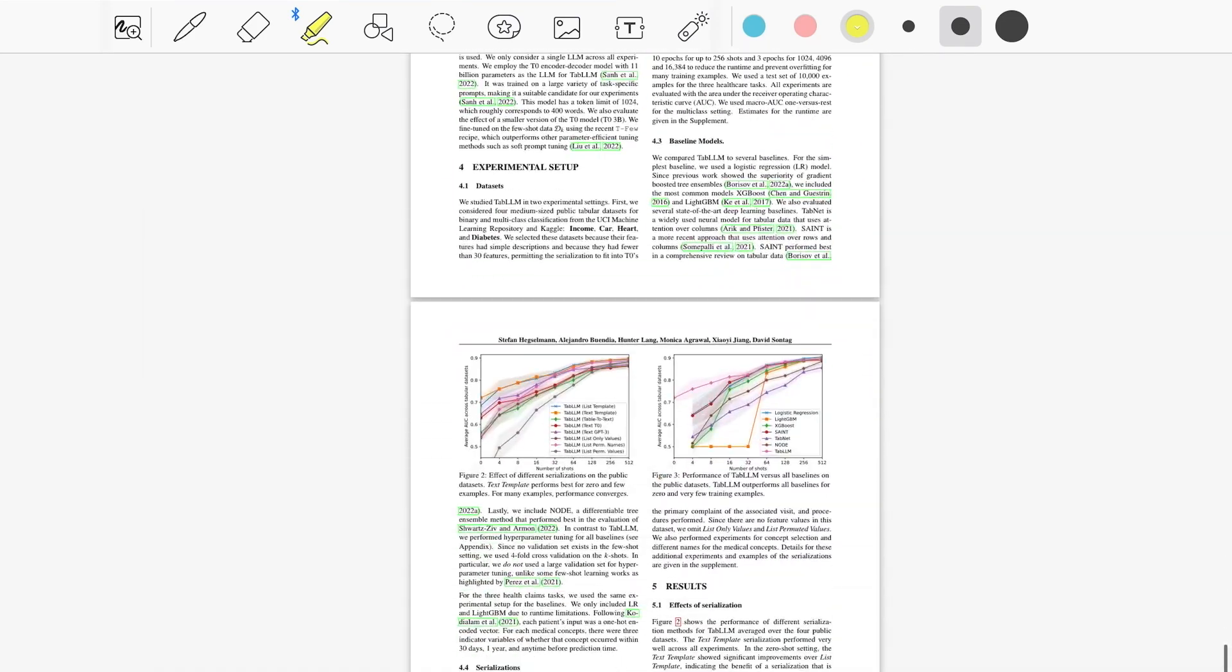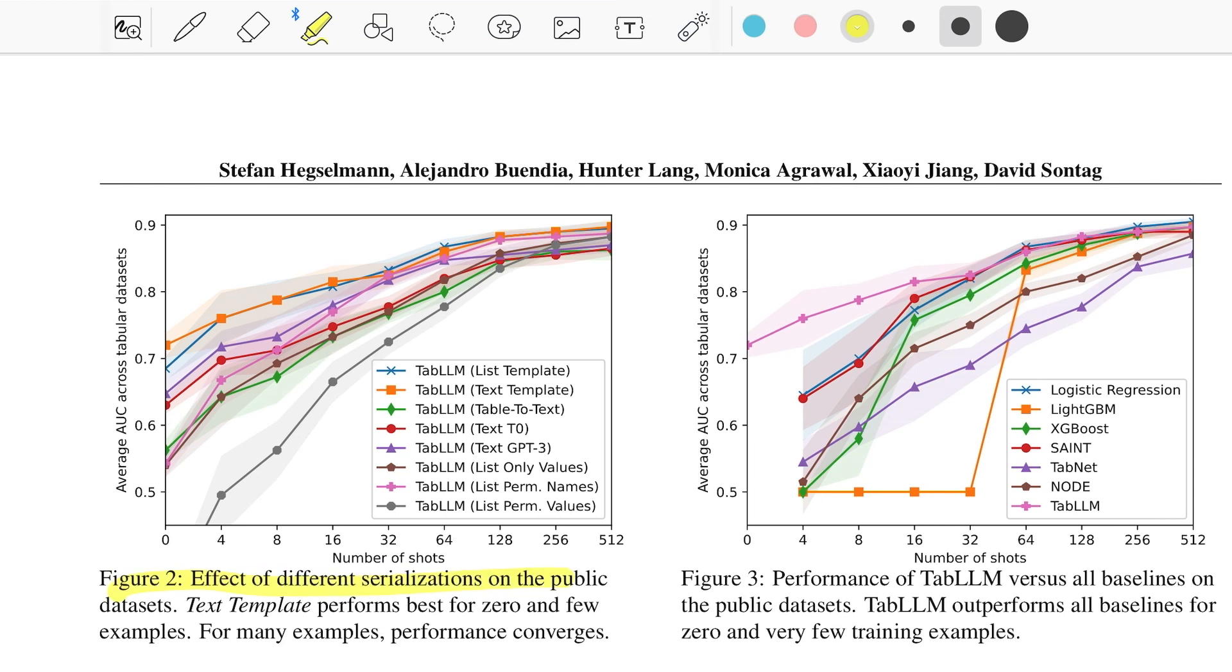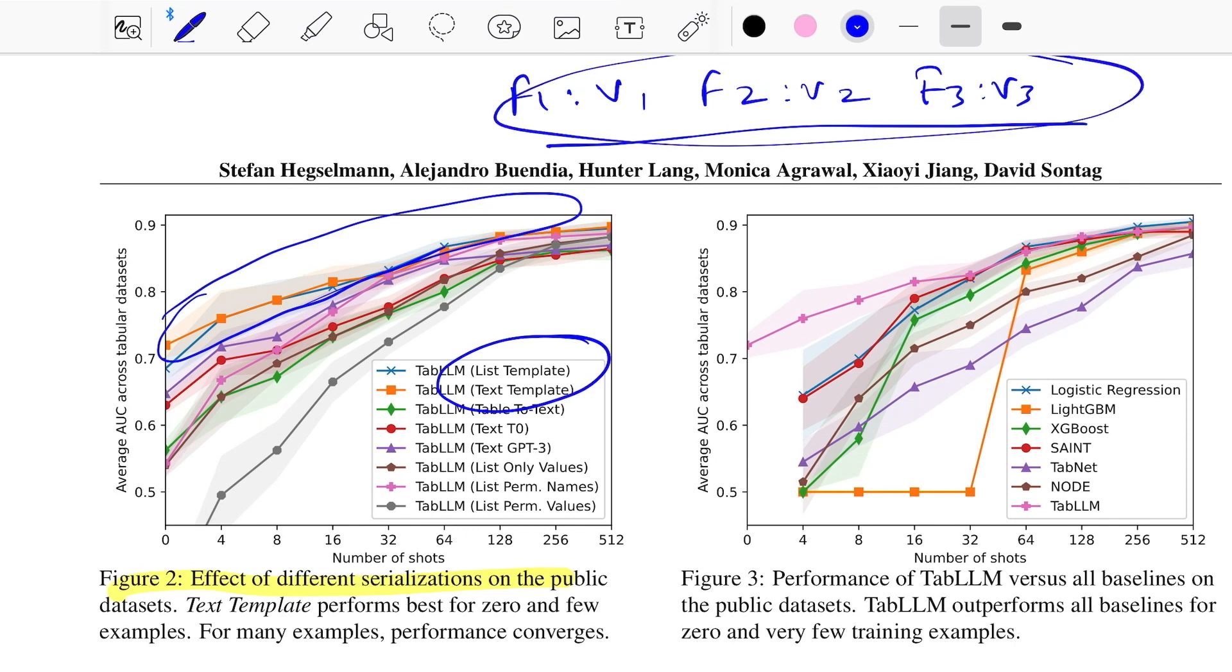Let's see some results. This figure shows the effect of different serialization methods on public datasets. Clearly we can see the blue and orange colored lines are on the skyline, which are based on list and text templates. List template means you have a feature f1 and the value v1, then feature f2 value v2, feature f3 value v3, and you concatenate all of this. That's list template. Text template is: the value of f1 is v1, the value of f2 is v2, and you concatenate all these strings.